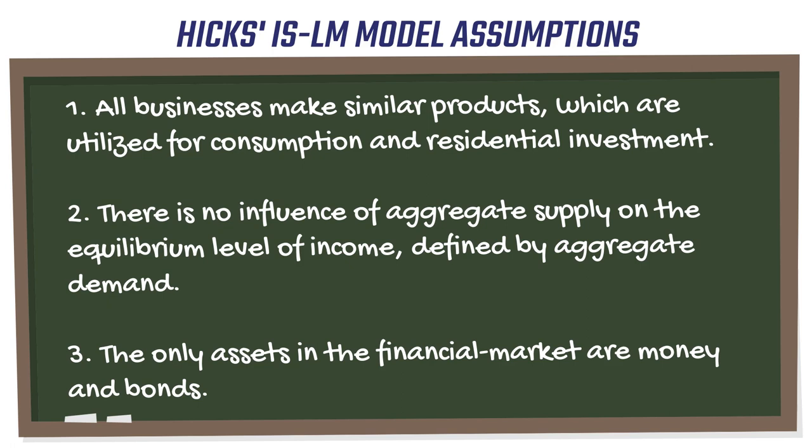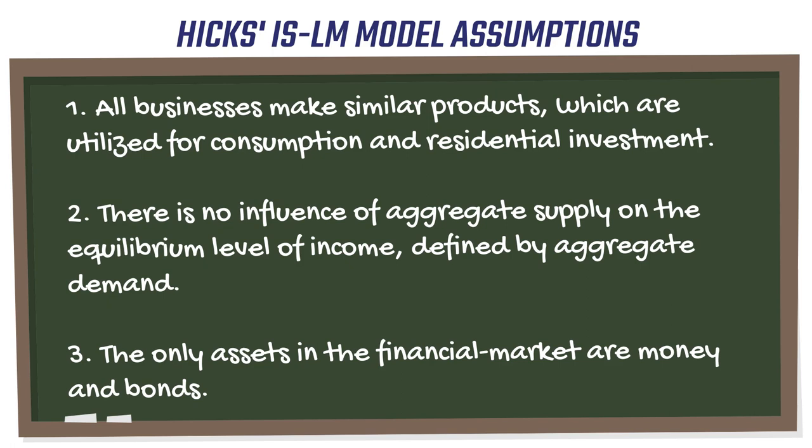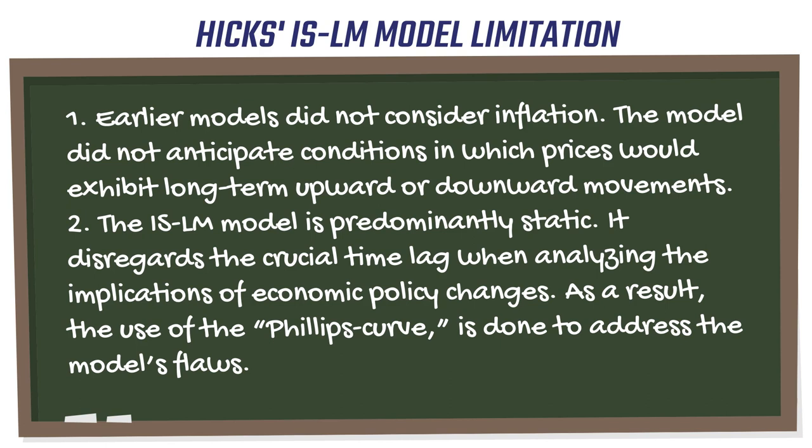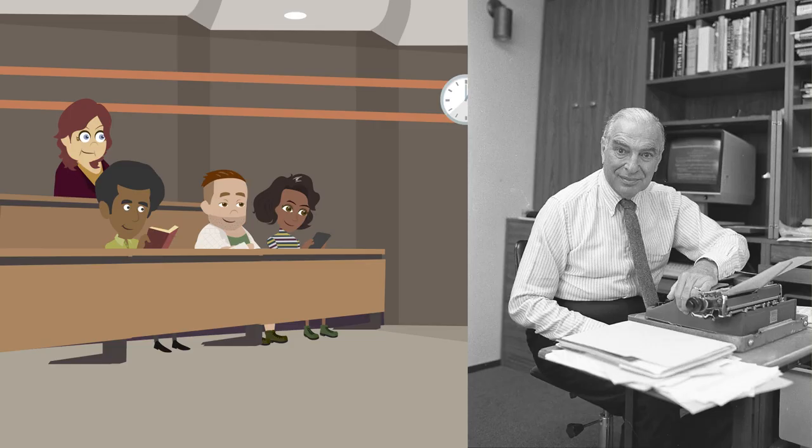The former is called IS or investment savings, while the latter is known as LM. The model is depicted on a graph where the IS and LM intersect at the point between the short-run equilibrium and the interest rates and output. It is often used to highlight how market preference changes affect the balance of interest rates and GDP.